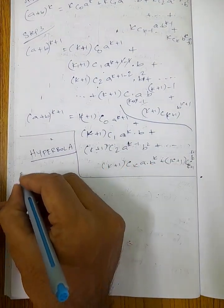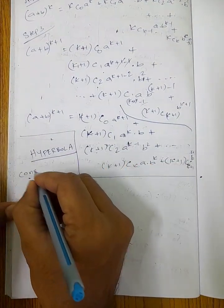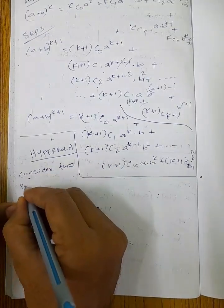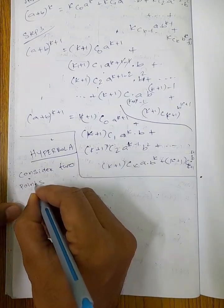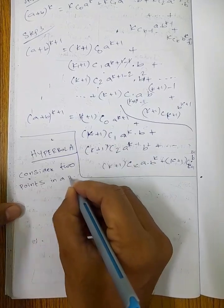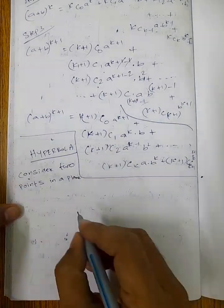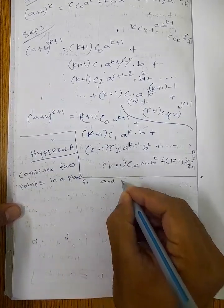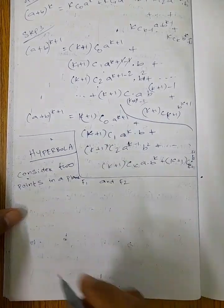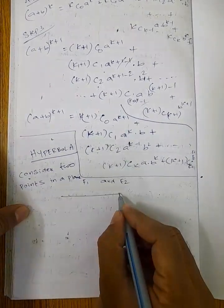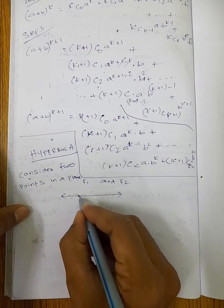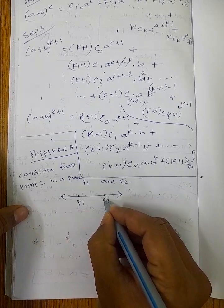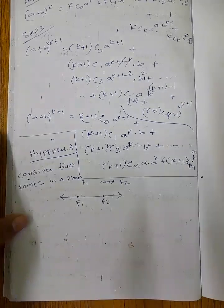First, consider two points in a plane. Let these two points be F1 and F2 in a plane.